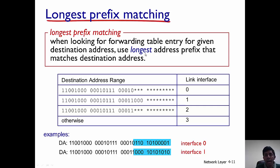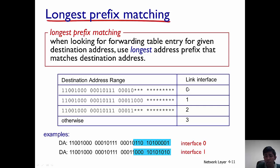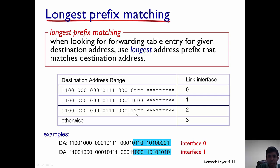When a packet comes in to a router it is forwarded using the destination address and using longest address prefix match. So what does longest address prefix match actually mean? In the first example shown here, you can see there is a match — the first 21 bits match the destination address corresponding to link 0. So this packet with this destination address is going to be forwarded along link 0.